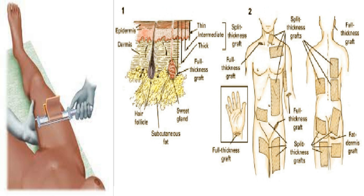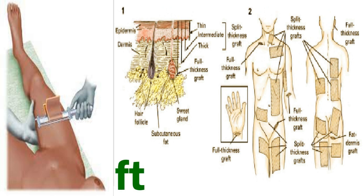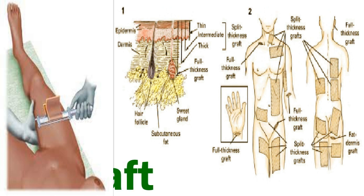Split thickness skin grafts (STSGs) can be of variable thickness, with the amount of dermis taken with the graft being the determinant of graft thickness. In general, the thinner the skin graft, the more likely the graft will survive or take, and the quicker the donor site will re-epithelialize. Donor sites heal by epithelial cells in the sweat glands and hair follicles dividing and migrating superficially across the donor site until contact inhibition occurs.